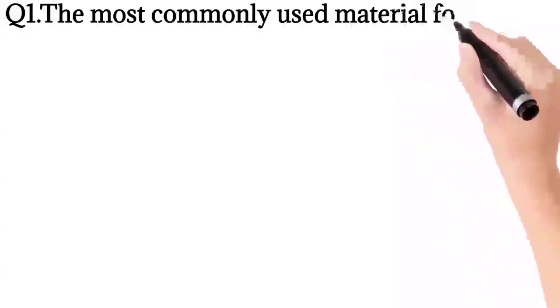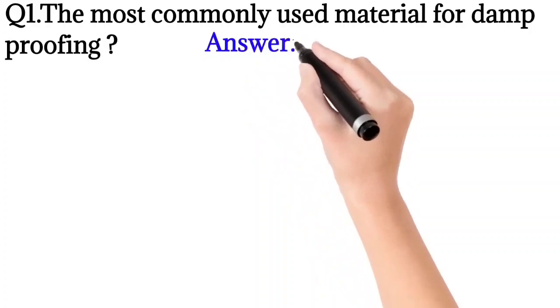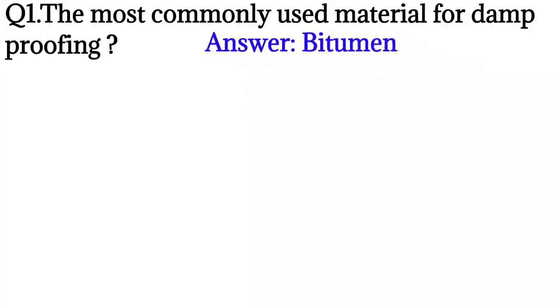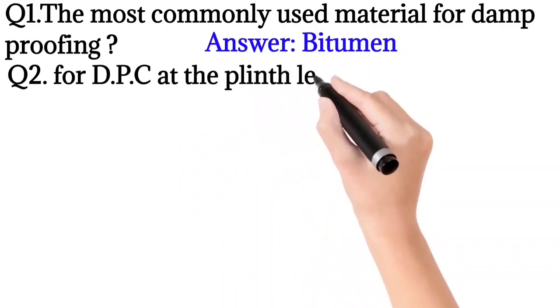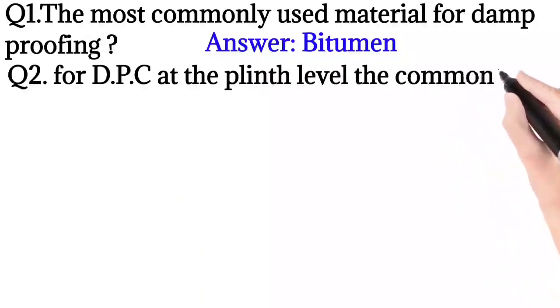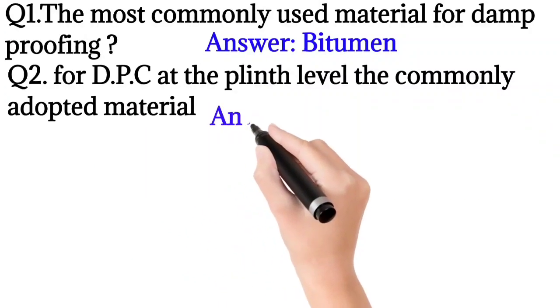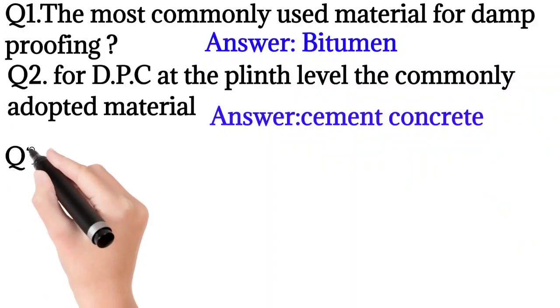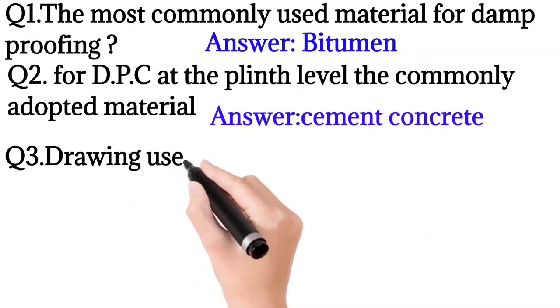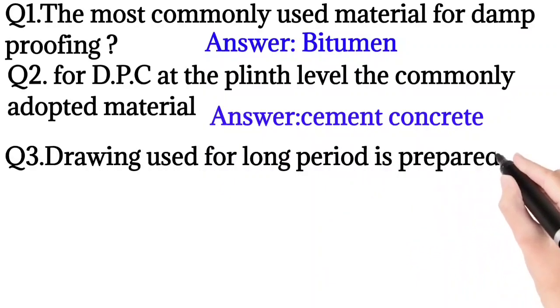Question number 1: The most commonly used material for damp proofing? So the answer is bitumen. Question number 2: For a DPC at the plinth level, the commonly adopted material? So the answer is cement concrete.